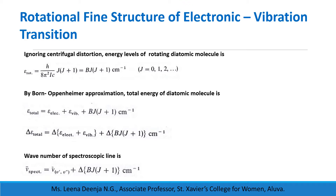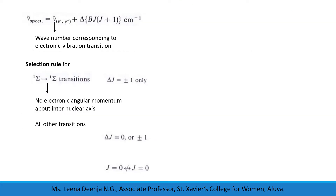By the Born-Oppenheimer approximation, the total energy of a diatomic molecule is the sum of its electronic energy, vibrational energy, and rotational energy. Therefore, the change in total energy equals the change in electronic and vibrational transition energy plus the change in energy due to rotational transition. The wavenumber of a spectroscopic line is written as ν̄ = ν̄(v', v'') + ΔBJ(J+1), where ν̄(v', v'') is the wavenumber corresponding to the electronic vibrational transition.